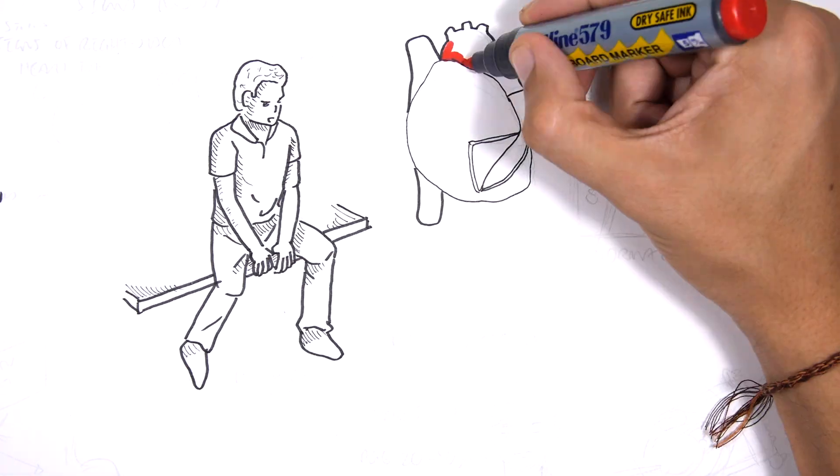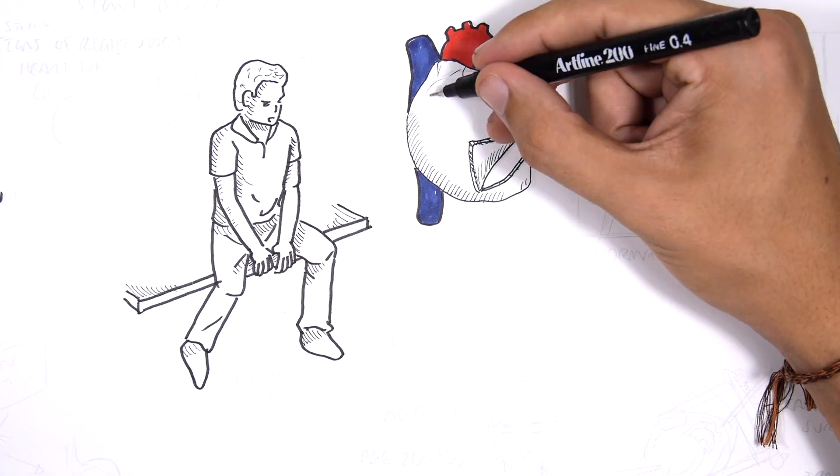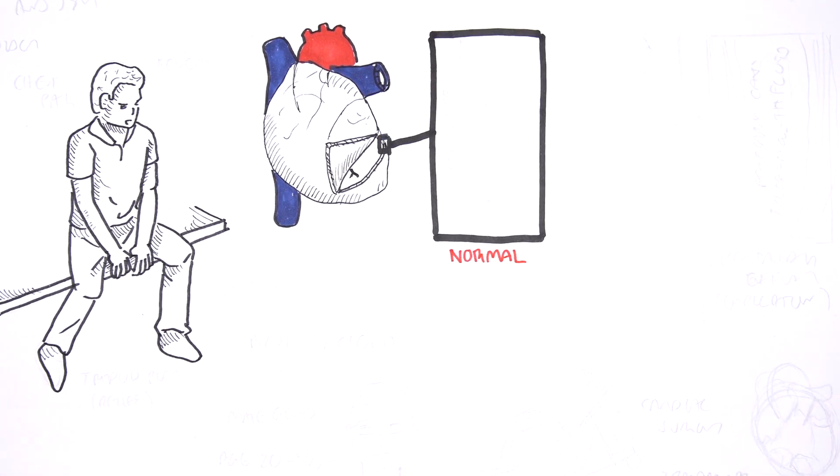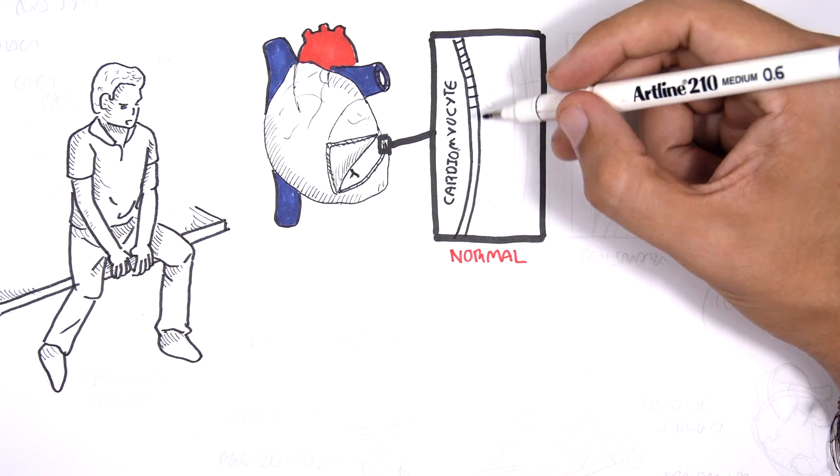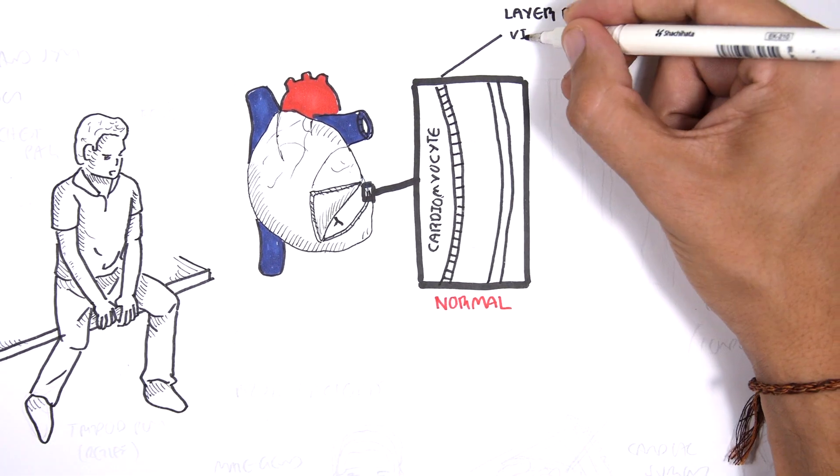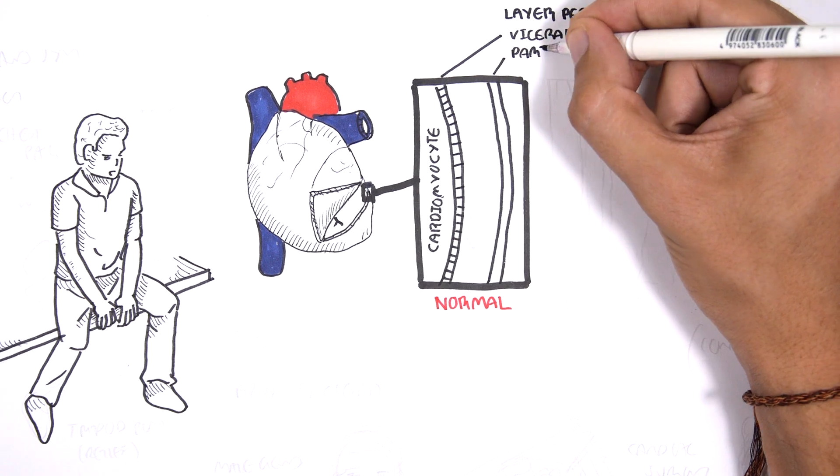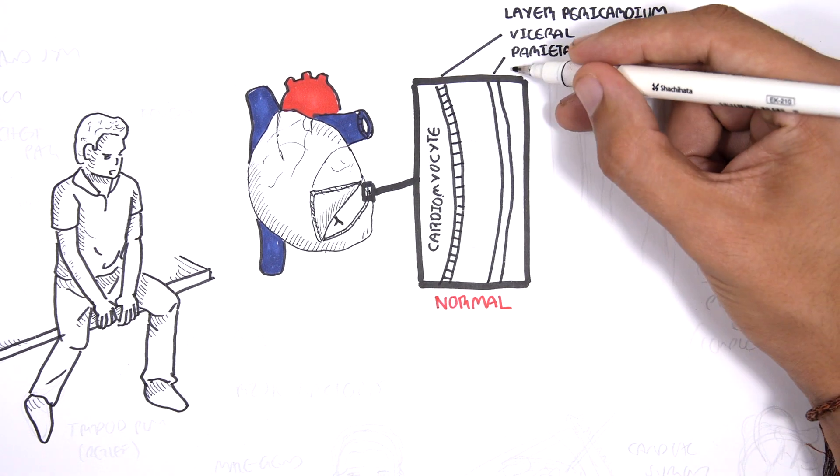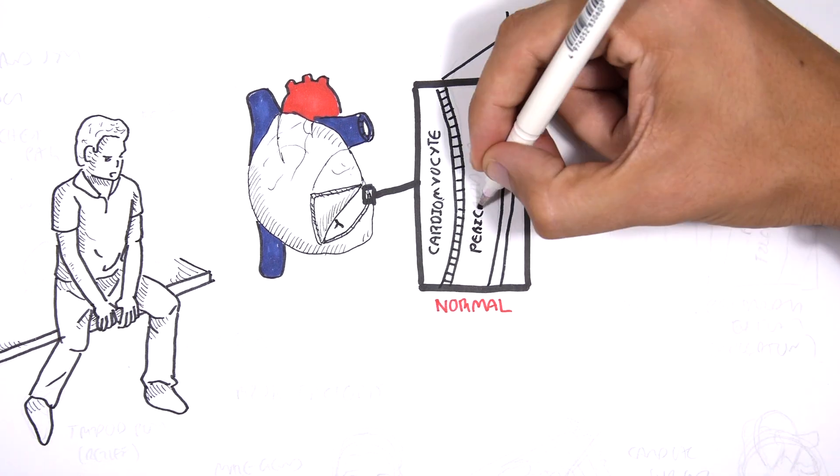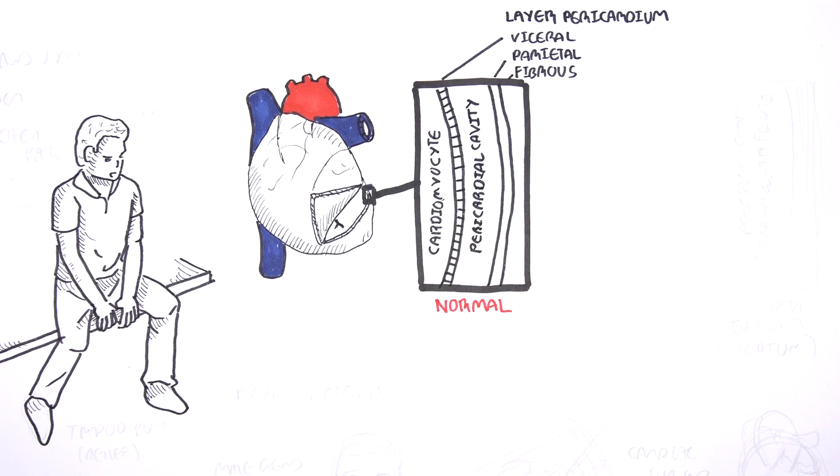The pericardium is a membrane that surrounds the heart. Here is the heart muscle, the cardiomyocyte. The layers of the pericardium include the visceral, parietal, and outer fibrous layer. Between the visceral and parietal layer is the pericardial space or cavity.